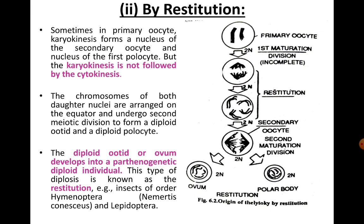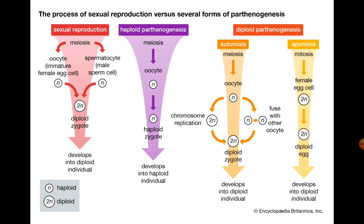In summary, Natural Parthenogenesis is of two types: complete and incomplete. These can be grouped into haploid arrhenotoky and diploid thelytoky. Diploid thelytoky can be further classified into ameiotic and meiotic. In meiotic diploid Parthenogenesis, diplosis of chromosomes occurs, and this can happen by either autofertilization or restitution.